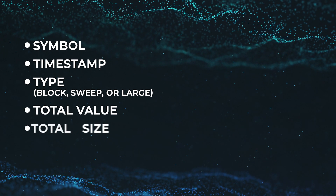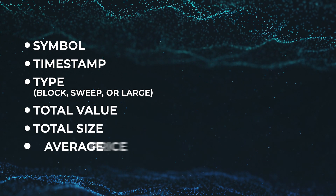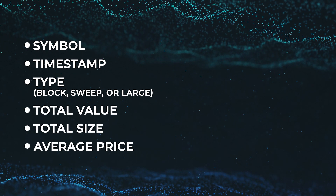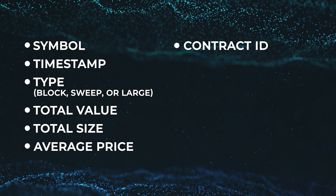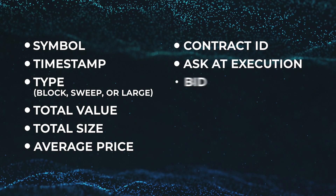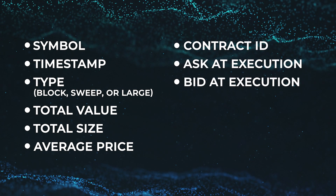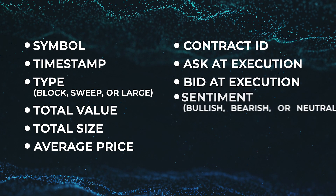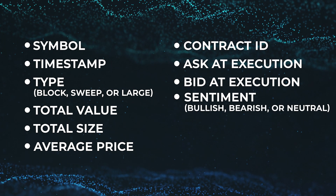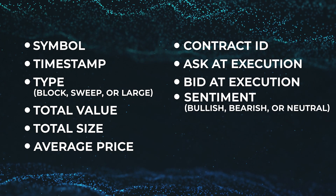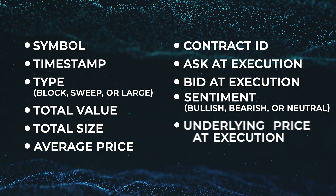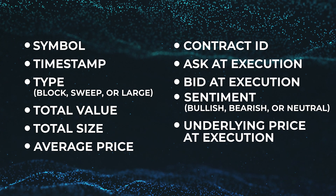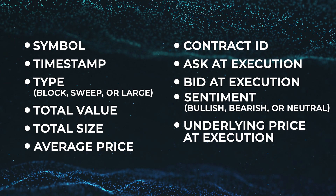Total value, total size, average price, contract ID, ask at execution, bid at execution, sentiment — bullish, bearish, or neutral (we'll come back to this special sauce in a minute as well) — and lastly, the underlying price at execution.